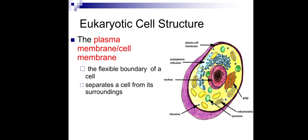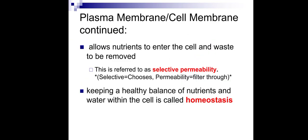The cell membrane separates the cell from its surroundings. Cell membrane or plasma membrane allows nutrients to enter the cell from outside, and waste products produced by metabolism to be removed. This mechanism is referred to as selective permeability — selective means to choose, and permeability means to filter through. By this mechanism, the cell membrane keeps a healthy balance of nutrients and water within the cell.